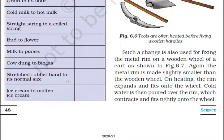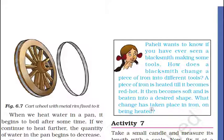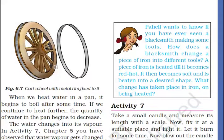The metal rim is made slightly smaller than the wooden wheel. On heating, the rim expands and fits onto the wheel. Cold water is then poured over the rim, which contracts and fits tightly onto the wheel.